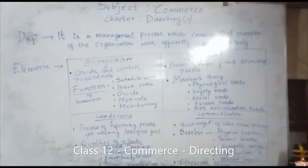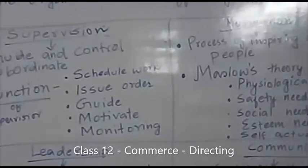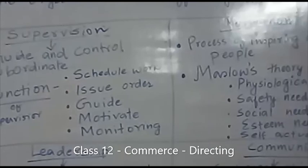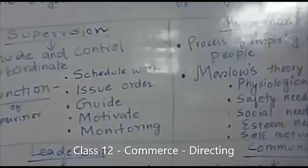If you look at the supervision box, you'll find I wrote the functions of a supervisor. The first function is they should assist you in work. Number two, they are the ones who issue orders. Number three, they are the ones who guide the subordinate. Number four, the supervisor is the one who motivates. And fifth, he is the one who monitors. So these are the five functions of a supervisor.